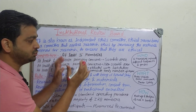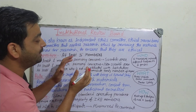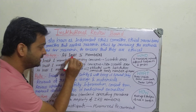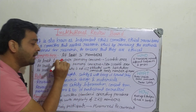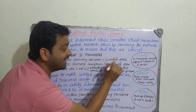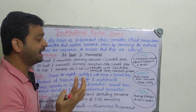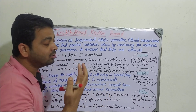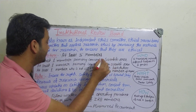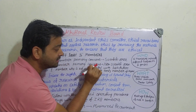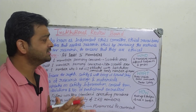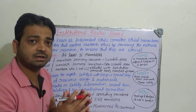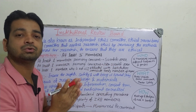Coming to the composition of this committee, at least five members are supposed to be there. At least one member should have a primary concern with the scientific area — they should belong from the scientific area, possibly a PhD holder or someone with a very good degree or training in that particular field. Another member should have a primary concern with the non-scientific area, which is also important. Not all members need to be scientists.